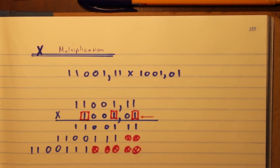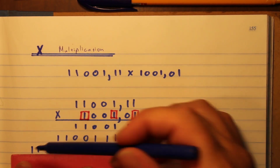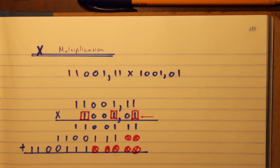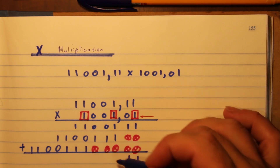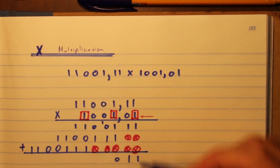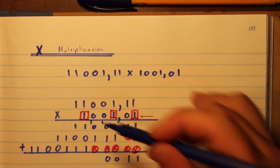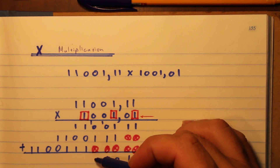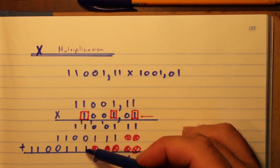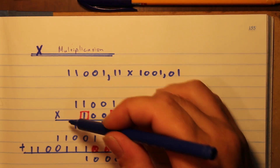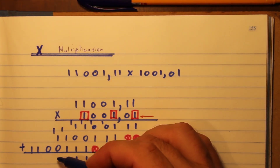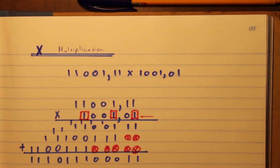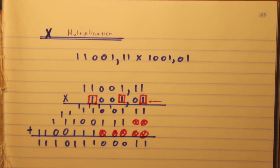I rule a line and use binary addition to add up the numbers. This column: one plus one plus one is three ones, so I put one and carry one. One plus one is zero carry one, one plus one plus one is three ones so one carry one, and so on — one carry one, one carry one, zero carry one, one, one, and one. That gives the full sum.